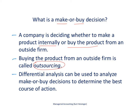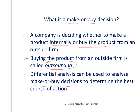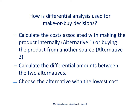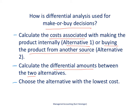Differential analysis can be used to analyze make or buy decisions. First, we have to figure out the costs associated with making the product internally — doing it on our own — and we call that alternative one. We also look at the costs associated with buying the product from another source, that is outsourcing. Then we figure out the differential amounts between those two alternatives, and choose the alternative that has the lowest cost. There are other qualitative factors to consider, covered in a separate lecture, but here we focus on the dollar amounts.